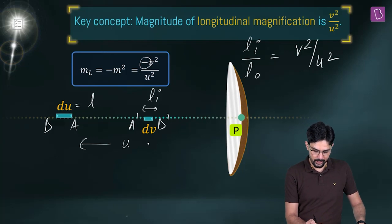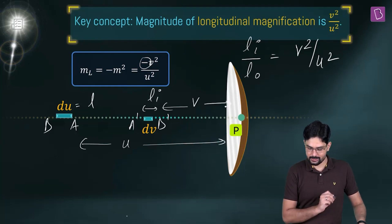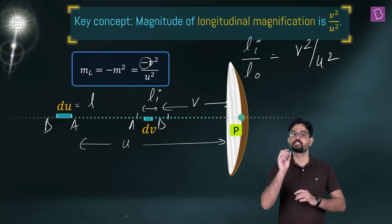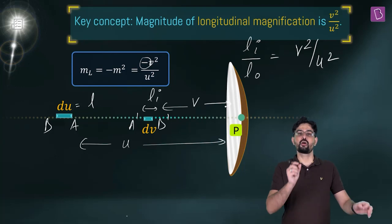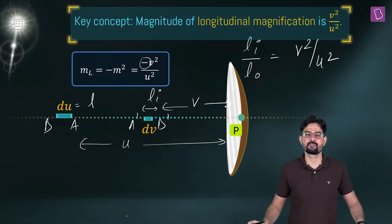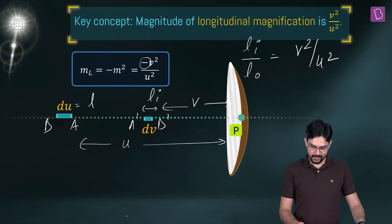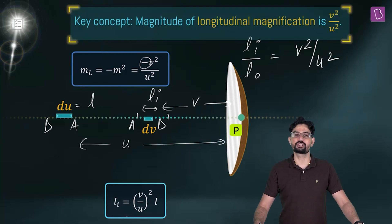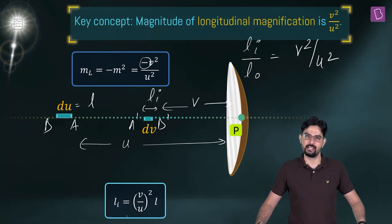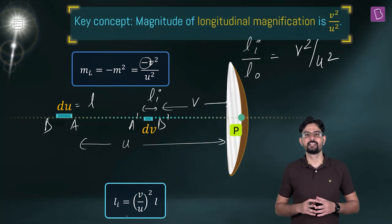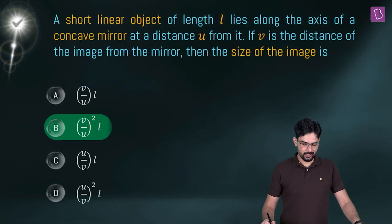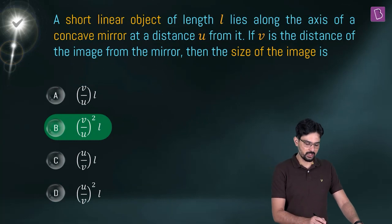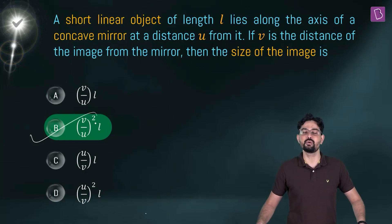This distance is U and this distance is V. Do note that this is only applicable for very small lengths. From here, the length of the image comes out to be (V/U)² into the length of the object L. So the length of the image is going to be V squared by U squared into L.